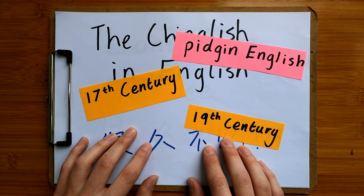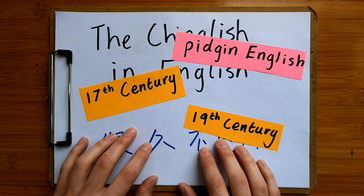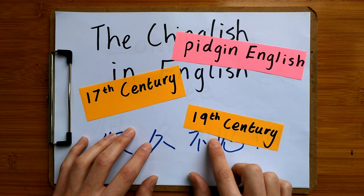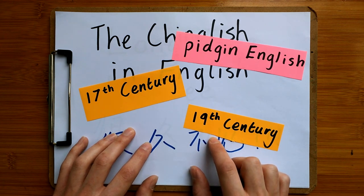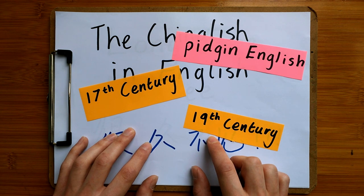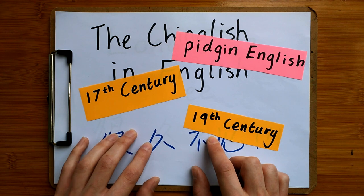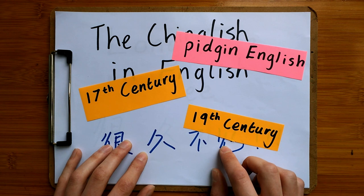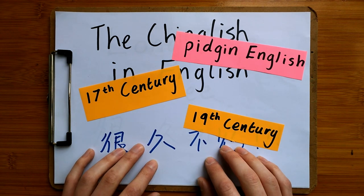Around the 19th century, Pidgin English stopped being used, and this is because of two reasons. The first one is that in the 19th century people started to learn standard English in schools. The second reason was people believed that Pidgin English was a very common language used by the common people, so people started to learn standard English and better educate themselves. Although it died out in the 19th century, some of the words and phrases still made it into the English language.